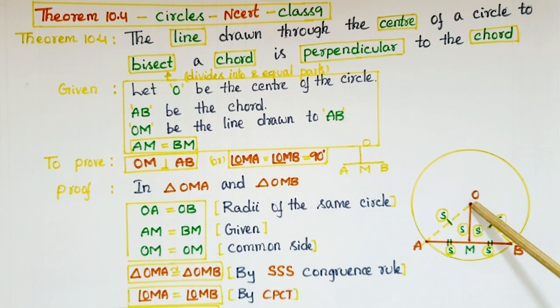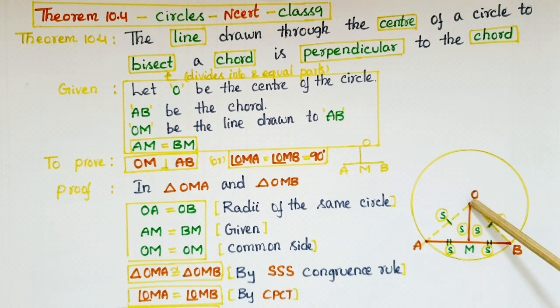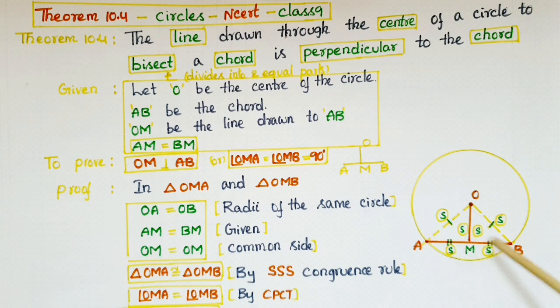Let O be the center of the circle and AB be the chord. We know that a chord is a line segment joining any two points on the circle and OM be the line drawn to AB. Here OM be the line drawn through the center of the circle to the chord AB.